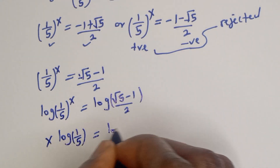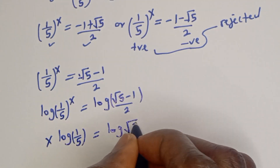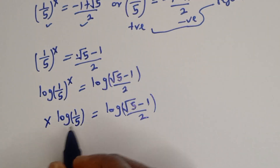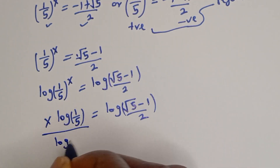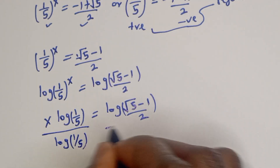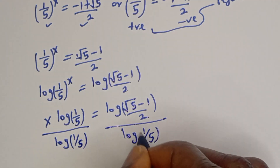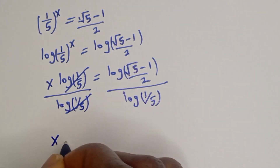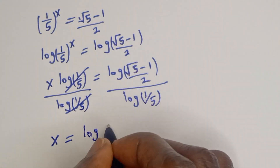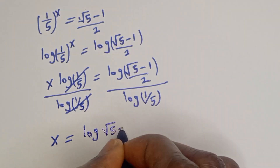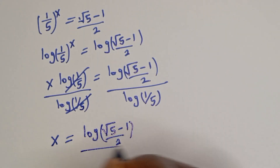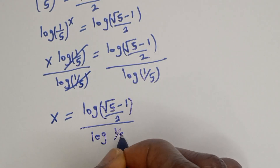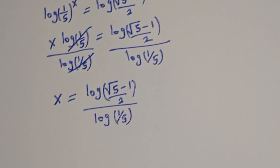We are looking for the value of s, so let's divide both sides by log(1/5). This cancels on the left side, giving s equals log of (square root of 5 minus 1) over 2, divided by log(1/5). That is our final answer.